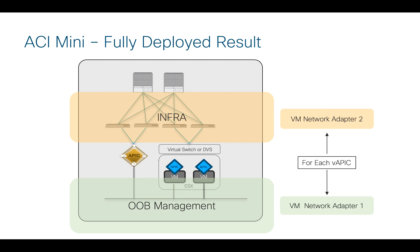At the end of all this — and I'm going to show you how to deploy all this — this is what it should look like: we have our one physical APIC and our two virtual APICs. For each of the virtual APICs, we have one virtual network adapter on the out-of-band management network and the other on the infra-facing port, so that we can form a cluster with the other APICs and everybody is happy. So at this point, let's actually get to showing you what this looks like when you deploy virtual APIC.